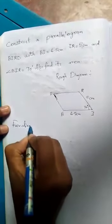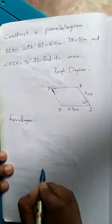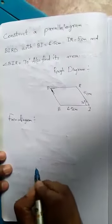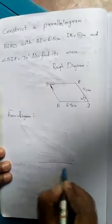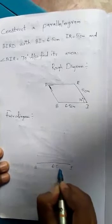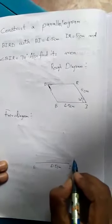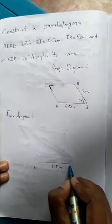To draw the fair diagram, step one: take the scale and measure BI equal to 6.5 cm. Take the protractor and mark the measurement of 70 degrees.